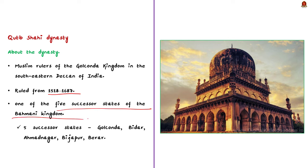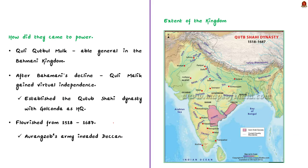Remember, they are one of the five successor states of the Bahmani kingdom. The five successor states are Golconda, Bidar, Ahmadnagar, Bijapur, and Berar. Regarding how the Qutb Shahi dynasty gained power: Quli Qutb ul-Mulk was an able general in the Bahmani kingdom. He was a Turk and was appointed as the Subedar of Telangana by Sultan Mohammed Shah Bahmani.